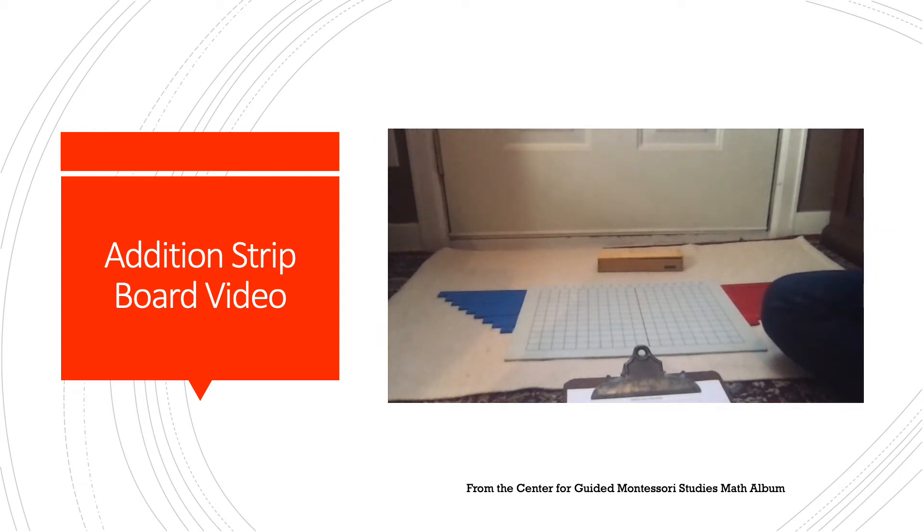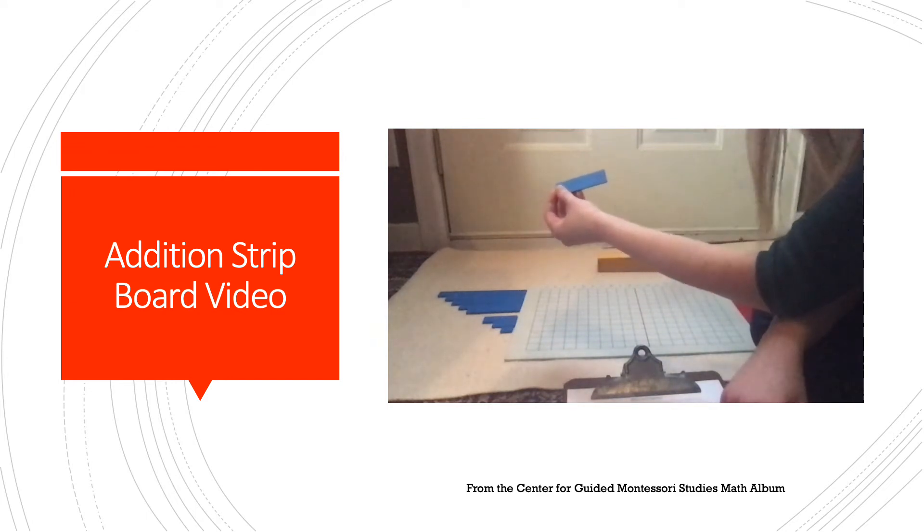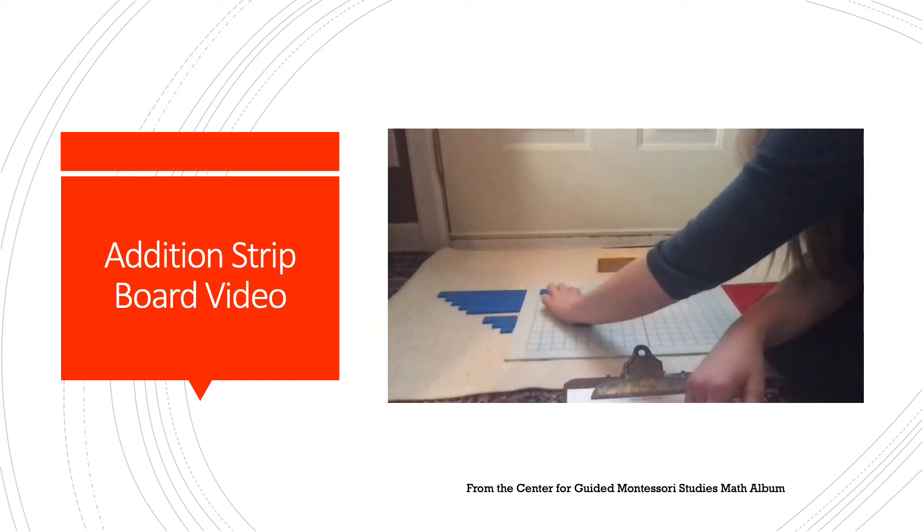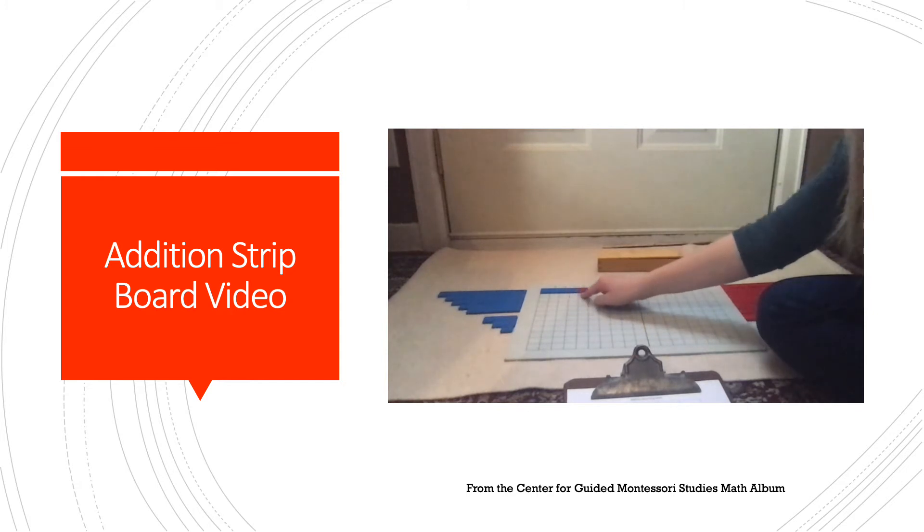The first problem that I see on my paper is four plus one. I'm going to take the blue four strip and place it at the top, and then I will get the one red strip and place it next to it. There are squares on the grid to help me organize my work. Four plus one equals five, and I see the five above the blue and the red strip.